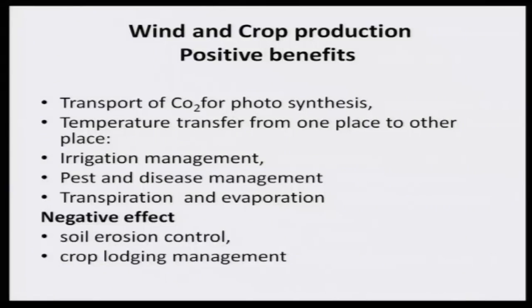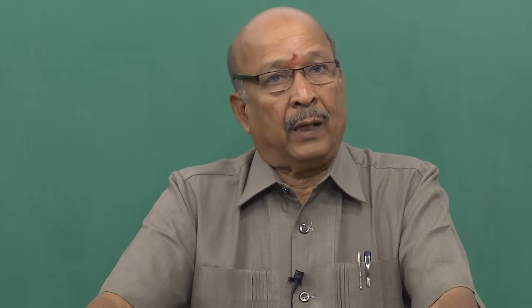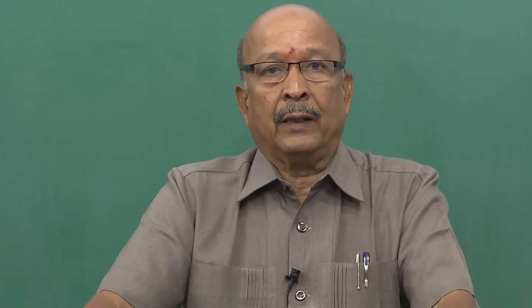Transpiration and evaporation are also very important. When ET is more, production would be more. For rice, ET is around 1,400 millimeters and yield is about 5 tons per hectare. In the case of pulses, ET is 250 and yield is only 200 to 300 kilograms per hectare. When wind movement triggers evaporation, you may get higher yield if the plant architecture is favorable.